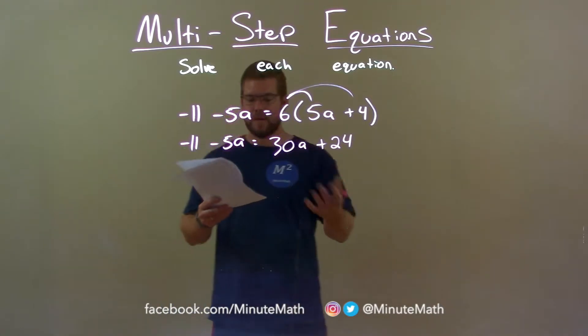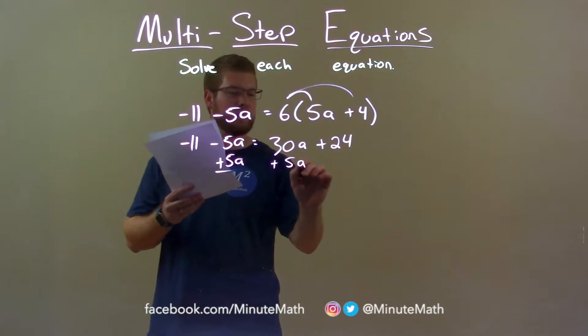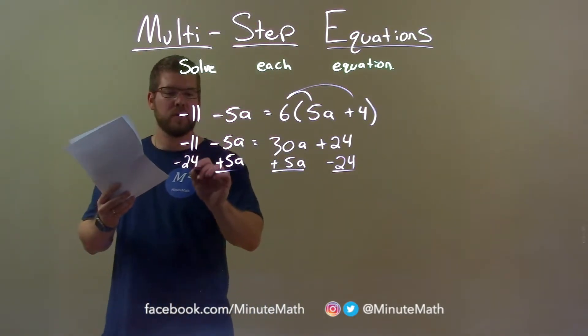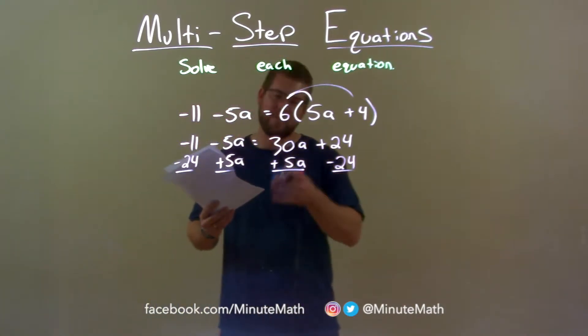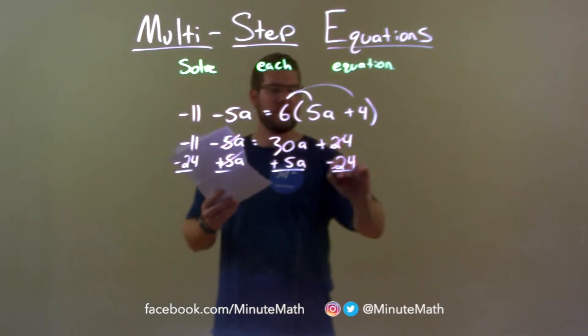Now I want to bring my like terms together. So I'm going to add 5a to both sides and subtract 24. Bring my numbers to the left and my variables to the right. 5a's cancel on the left, 24's cancel on the right.